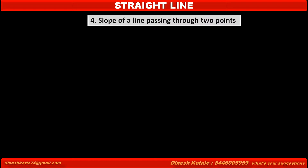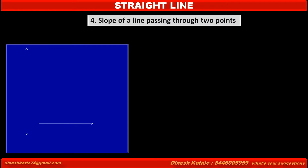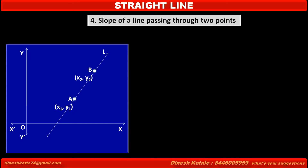Now we have to find the slope of a line passing through two points. Consider a coordinate system with x-axis and y-axis. We take two different points in this system: first point A with coordinates x1, y1, and second point B with coordinates x2, y2. Passing through these two points we draw a line, say L.